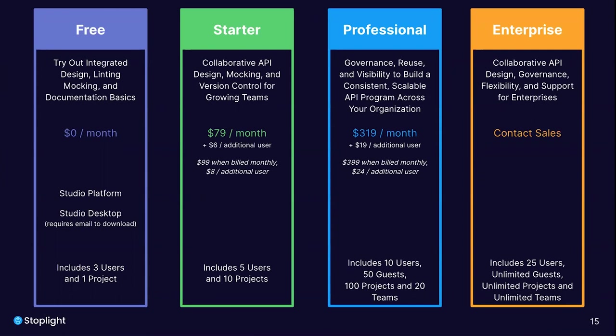With external guests on the Professional plan, you can invite users external to your organization to view your internal API design specifications and documentation from behind an authenticated session. The Enterprise plan includes 25 users, unlimited projects, unlimited external guests, and unlimited teams. You also gain volume license discounts, additional account invoicing flexibility, custom payment terms, and enhanced onboarding and training engagements with our Customer Success team along with enhanced priority for your support cases.